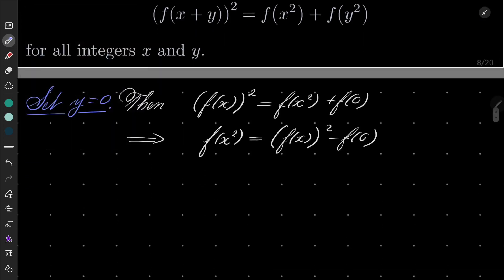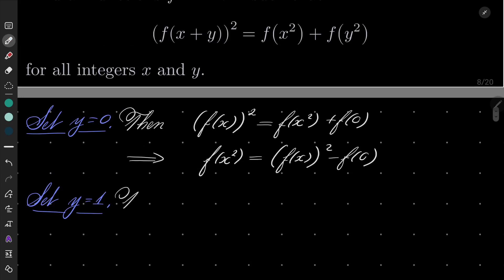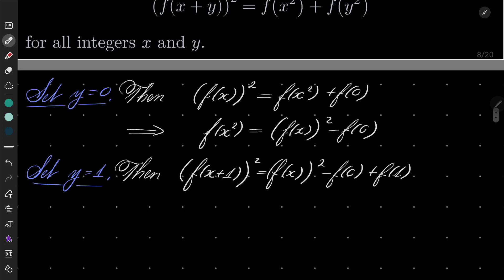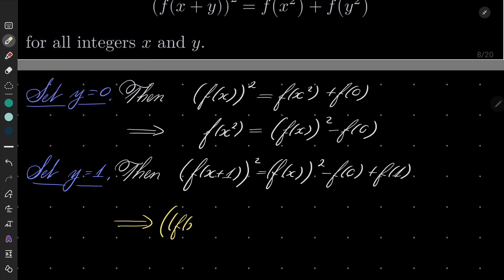Now let's set y to be equal to one. Then we get: f of x plus one quantity squared equals f of x squared plus f of one. But we know that f of x squared can be written as f of x quantity squared minus f of zero, plus f of one. If you look closely, this term differs from the previous term only by some constant. That means, crucially, that the sequence f of x squared, going over all integers, is an arithmetic progression.